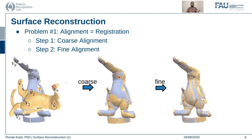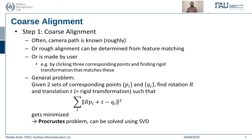The first problem — alignment or registration — can be divided into two steps: coarse alignment and final alignment. In coarse alignment, we already know some camera parameters and a rough alignment can be determined from feature matching. Either the user provides input for the points to be matched, or a rough estimate is made from feature correspondences by clicking on three corresponding points or finding a rigid transformation. The general problem is: given two sets of corresponding points p_i and q_i in two different scans, we need to find a rotation and translation that minimizes the alignment error.